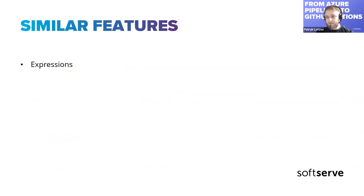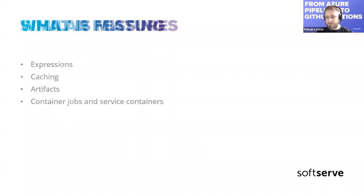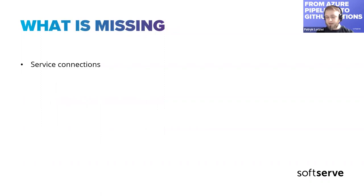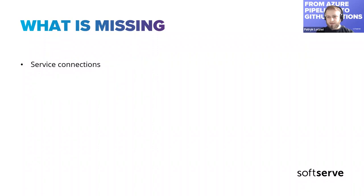To make a little summary: similar features on both CI/CD platforms are expressions, caching artifacts, container jobs, and service containers. What is missing in GitHub Actions — service connections. In Azure Pipelines you could specify service connections for different sources: a repo, a container registry, an Azure subscription. You don't have that in GitHub Actions, but that's not because it's a missing feature — we just do it in a different way.